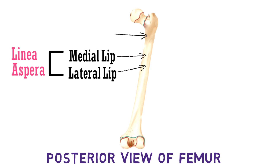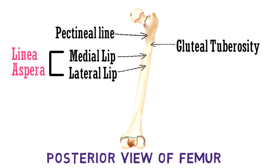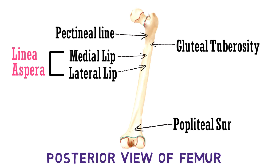In the upper one third, the lips diverge and the medial lip in this area is called the pectineal line. The lateral lip ends near the gluteal tuberosity, which is present here. Lastly, in the lower part, these lips diverge and this area in between is called the popliteal surface.